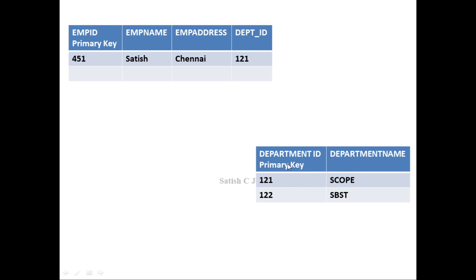The department ID should be unique in that column. If I want to know the department name for Satish, I take this ID, search it in the department table, and find the department name as 'Scope'. There are two requirements for this value: it should be unique in the department table's department ID column, and whatever value we enter must be present in that department ID column. This value is used for linking the employee table and the department table.